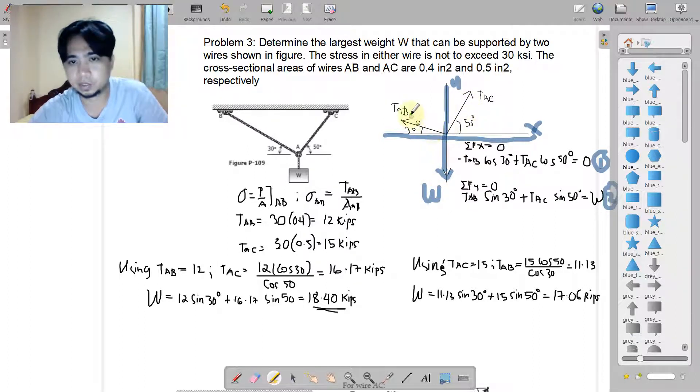If we have the free body diagram as a method of joints, we have here the downward W and we have this diagonal forces AB tension AB and tension AC. We write the equilibrium equation. Because this is concurrent forces, we use two summation: forces X and summation forces Y is equal to zero.